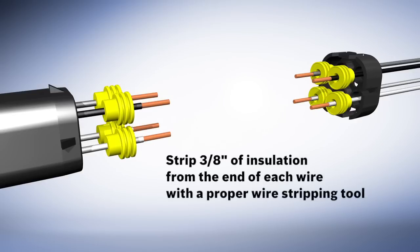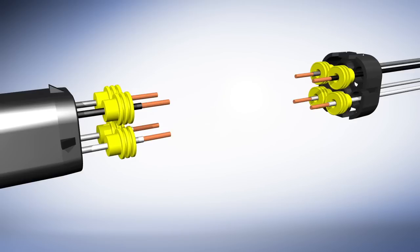Strip three-eighths of an inch of insulation from the end of each wire with a proper wire stripping tool. When all wire sleeves have been installed and all wire ends stripped, align the wires so the proper connections can be made without criss-crossing the wires.